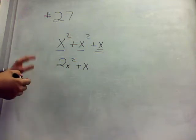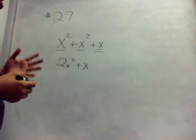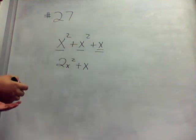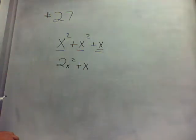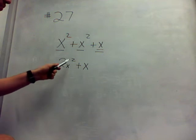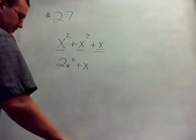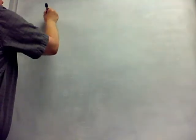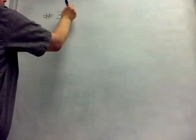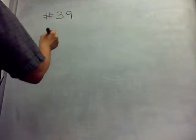When we're looking for like terms, we're looking at the exponents, but we're not going to change them at all. So it's not going to be x to the 4th, it's just going to be 2x squared. So we have 2x squared plus 1x. Number 39 is the next one in the line, which is on the next page.